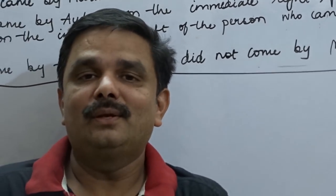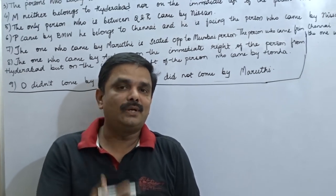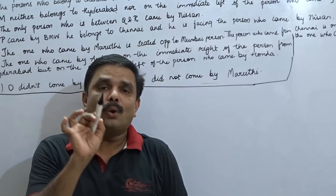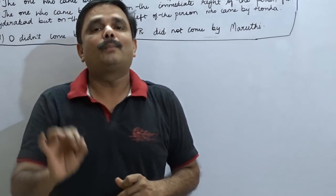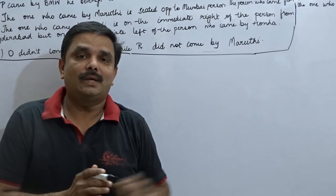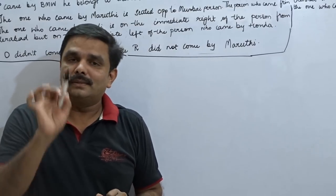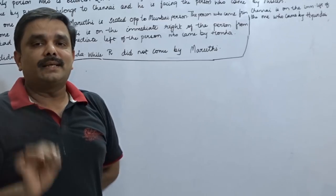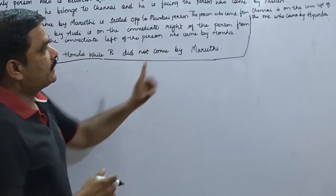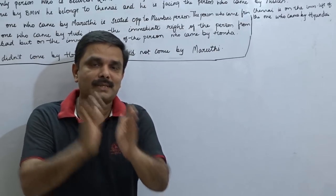First, try to write the problem after pausing the video, or take the reference from the description where I have typed the question. All the data should be taken into consideration while going for this problem — only then you are able to solve it. Many students get confused with this type of question. This question has both a seating arrangement and a puzzle component — it is a combination of arrangement and puzzle.